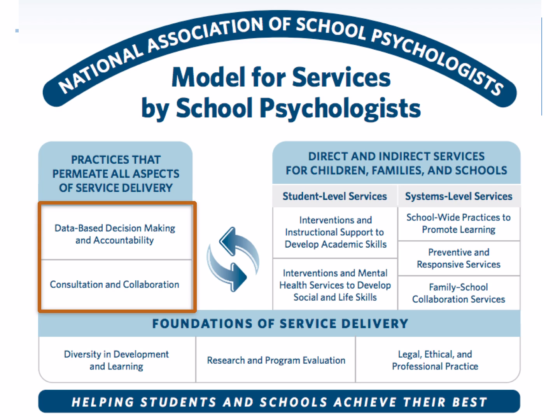The rooms in your house serve several functions, but they are made more effective by the utilities that run through them. The kitchen is more effective with gas to the stove, electricity to the refrigerator, and water to the sink. Bedrooms are more useful with electricity. Utilities increase the capacity of the system. In the practice model, data-based decision making, consultation, and collaboration are the utilities that allow full use of our rooms.